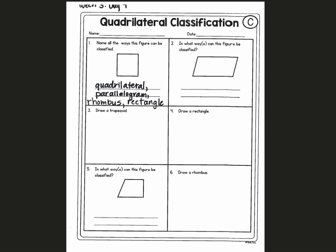And it is also a square because it has four right angles and four congruent sides. A square is a special shape because it has a lot of names and a lot of properties.